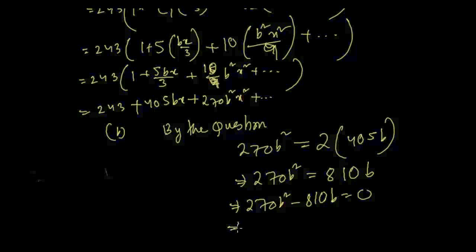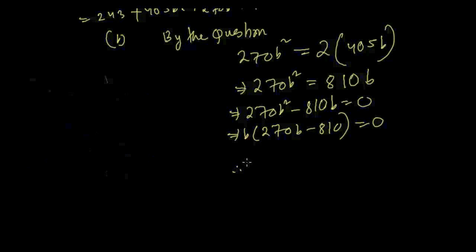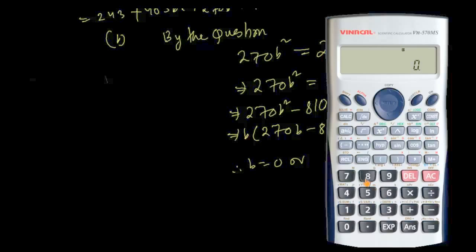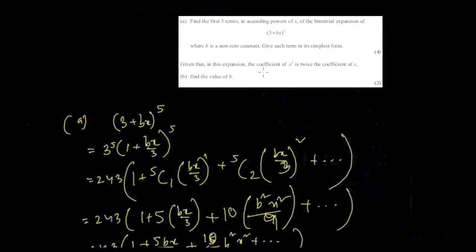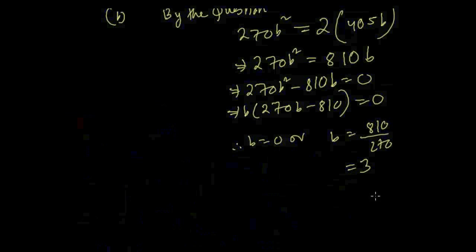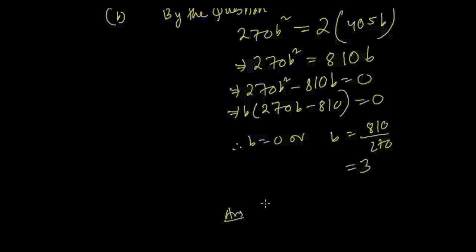This is a quadratic equation — you cannot cancel off any value. Taking b common: b(270b − 810) = 0, so b = 0 or b = 810/270 = 3. Since the question states b is not zero, the answer is b = 3.